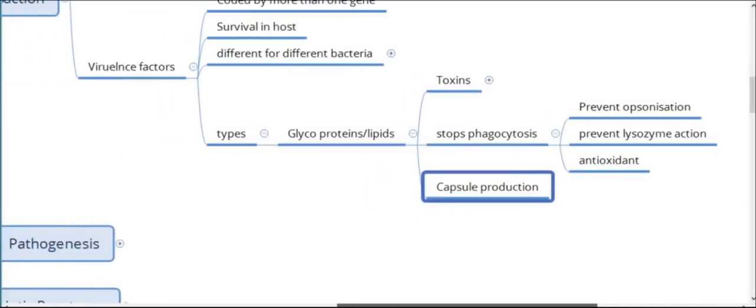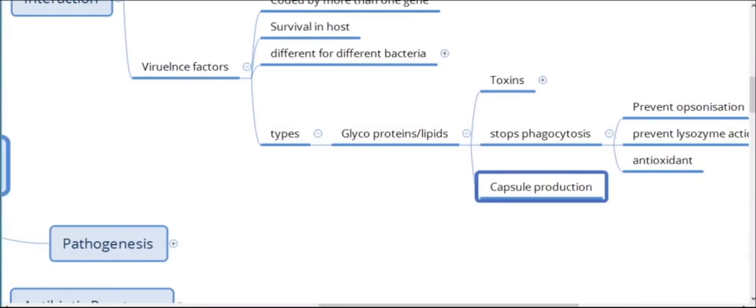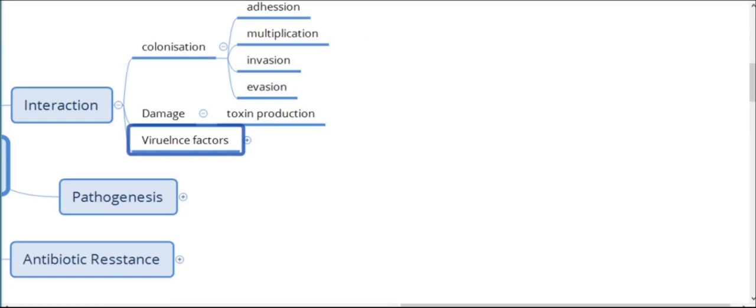Virulence factors are basically glycoproteins or lipids in nature. They can be toxins that kill phagocytic cells. Exotoxins are produced by gram-positive bacteria and endotoxins by gram-negative bacteria. They can stop phagocytosis once the bacteria is internalized — by prevention of opsonization, prevention of phagolysosome formation, production of large amounts of antioxidants, or by capsule production.